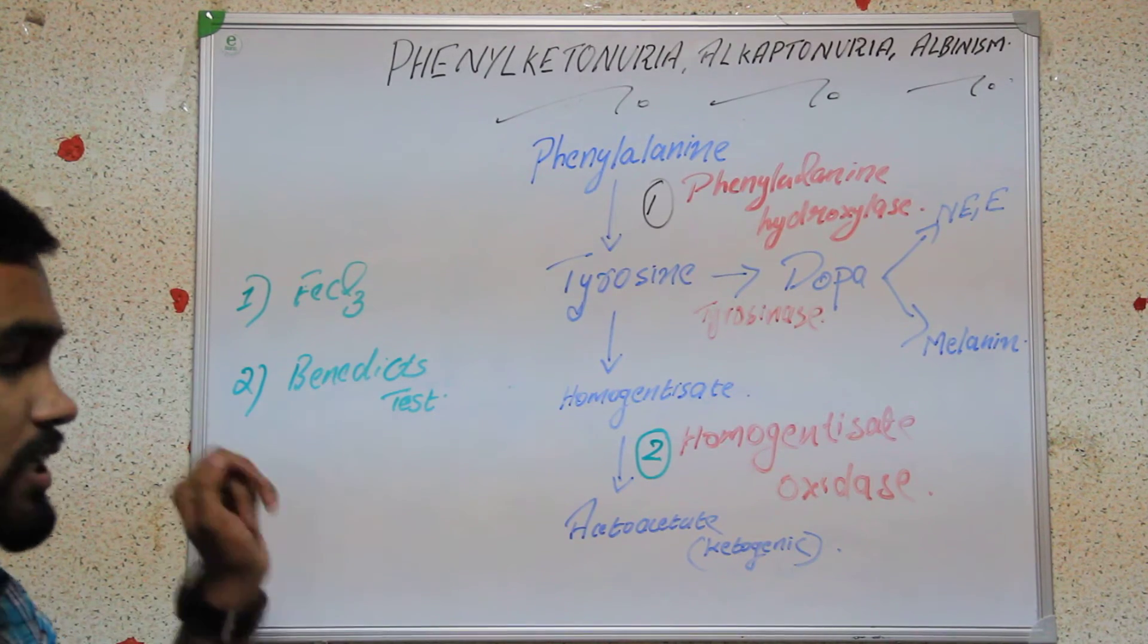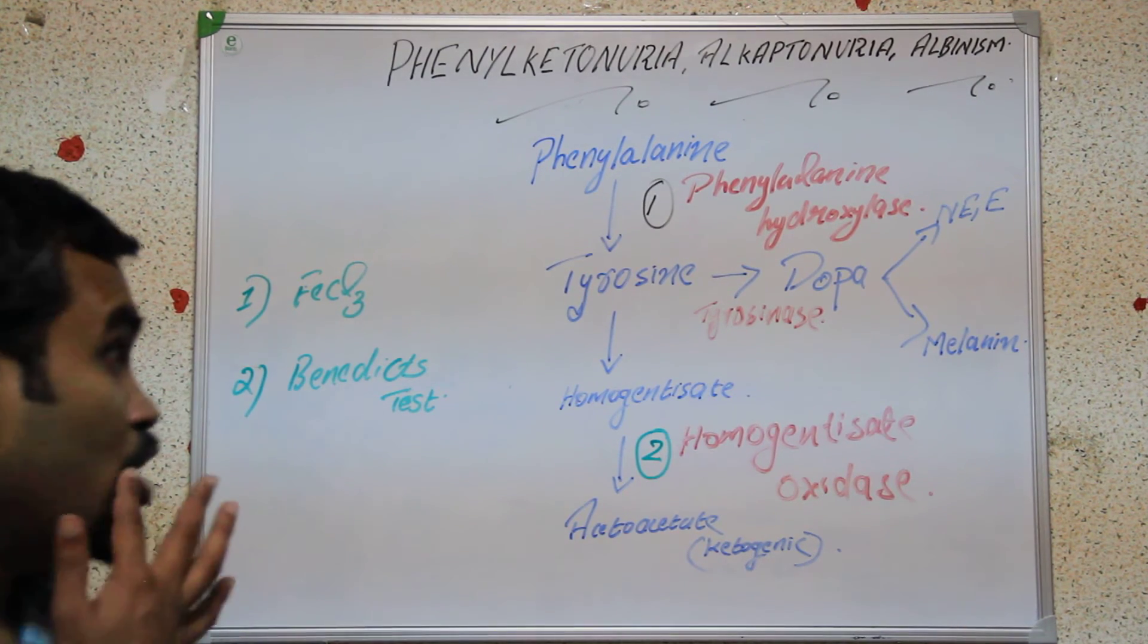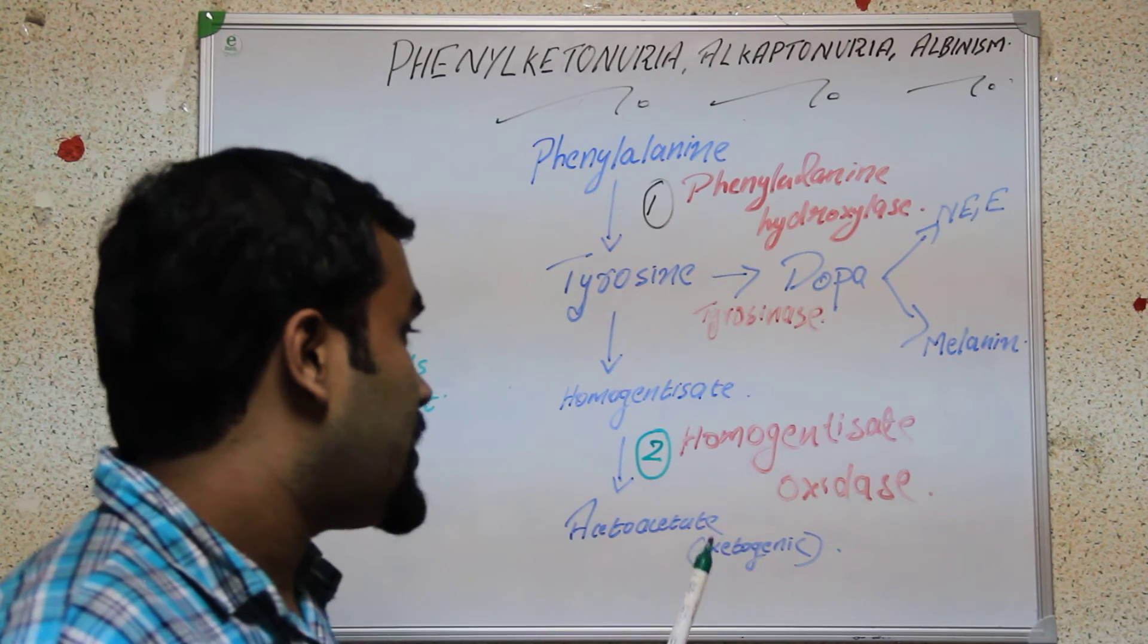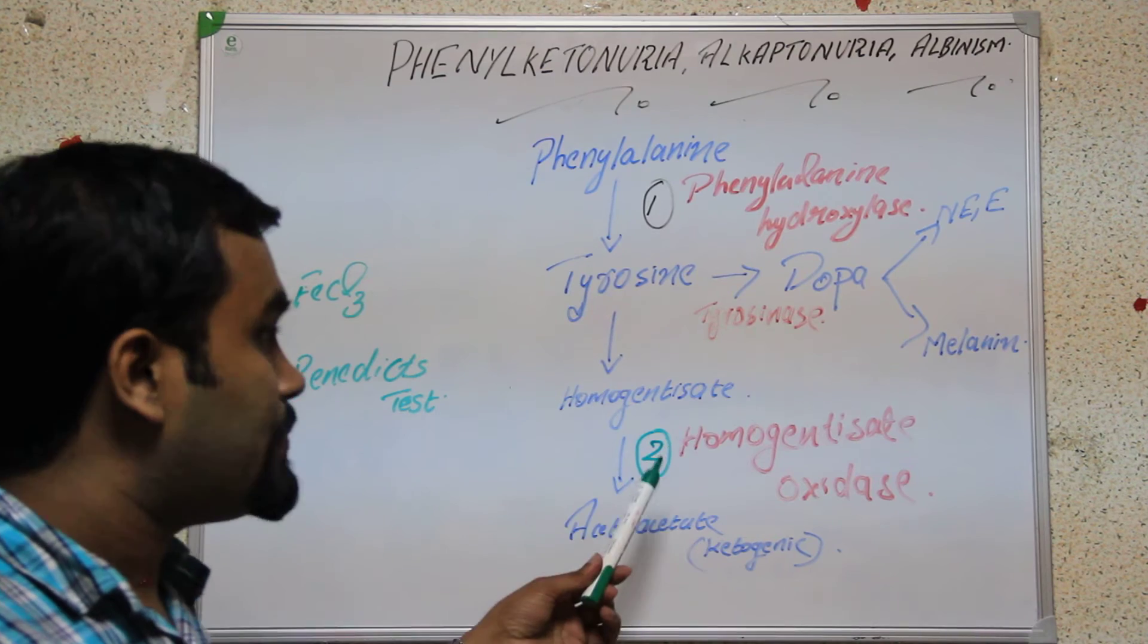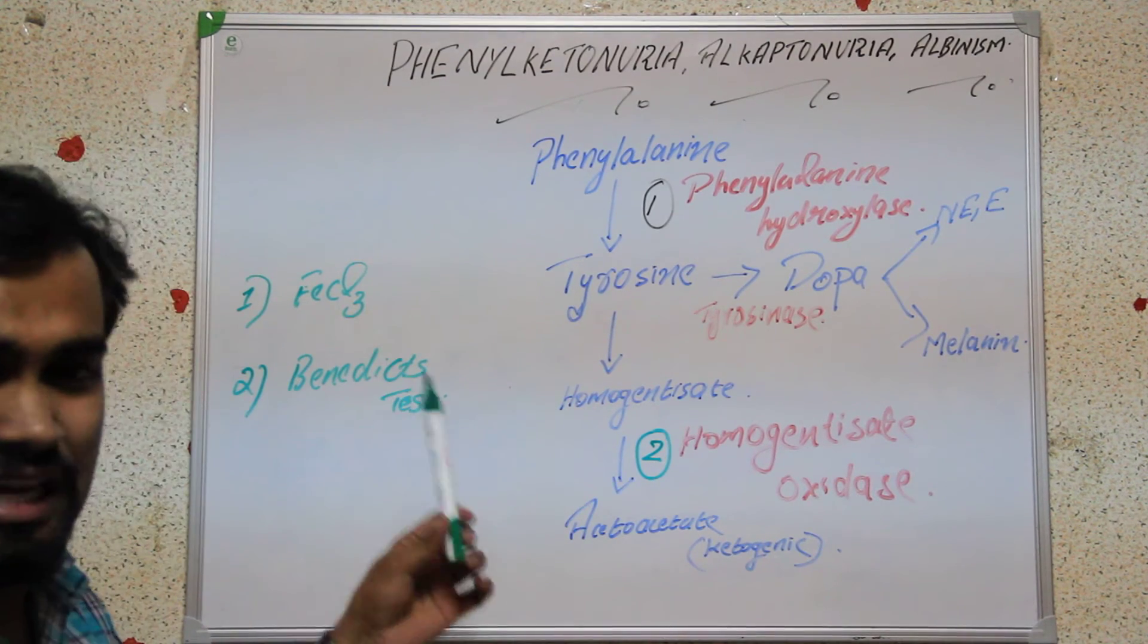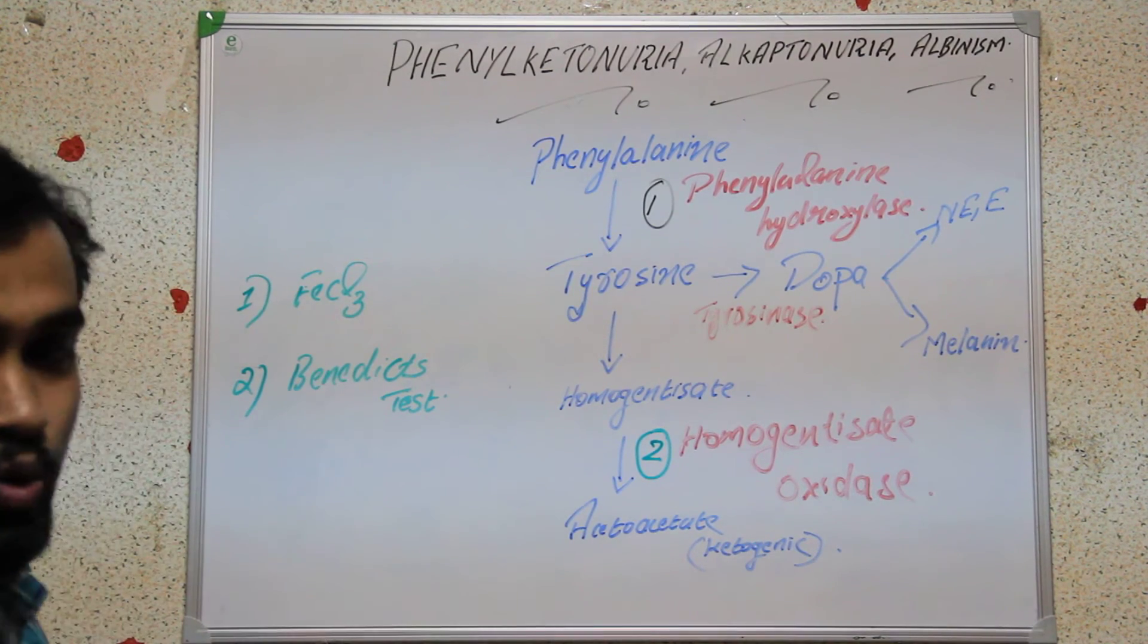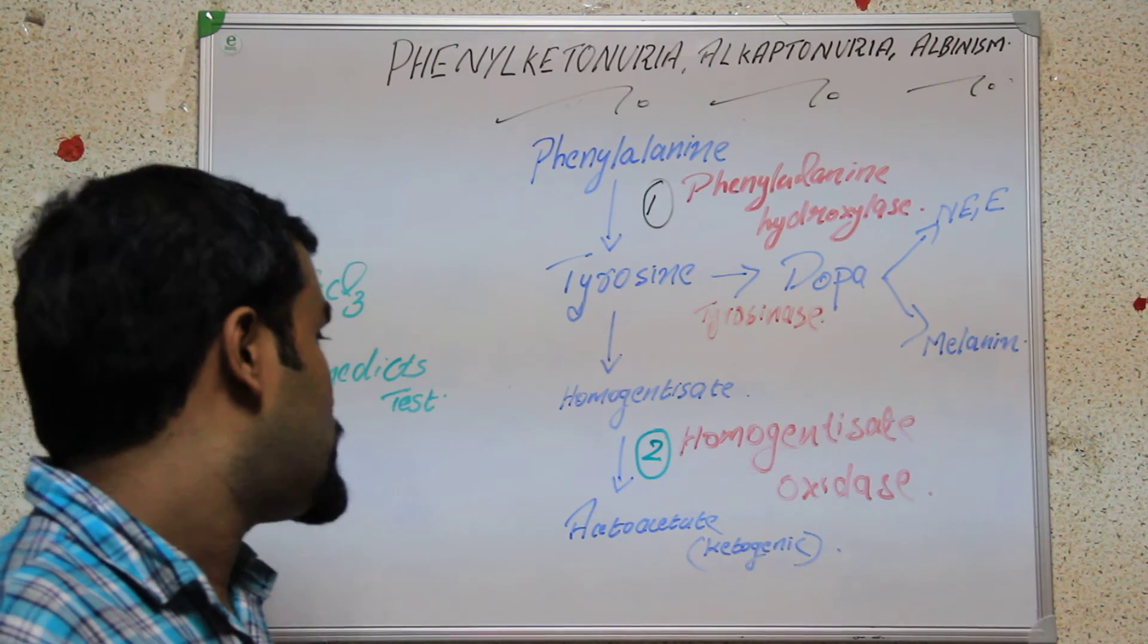Let's take a review. What is alkaptonuria? We have to remember this enzyme, homogentisate oxidase. The deficiency of this enzyme causes alkaptonuria. The clinical manifestations mainly include black urine, then ochronosis.